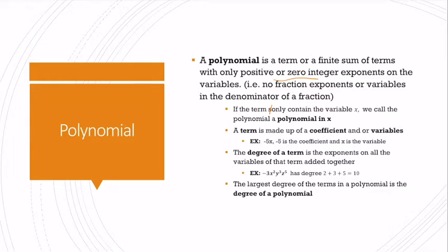So a term is made up of coefficients and variables, or just a coefficient. The coefficient is the number in front of our variable. If the coefficient is not in front of a variable, we can also call this a constant.